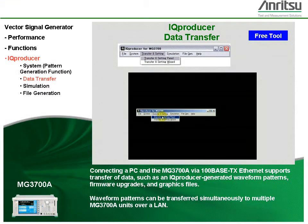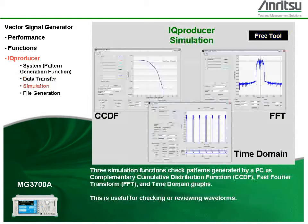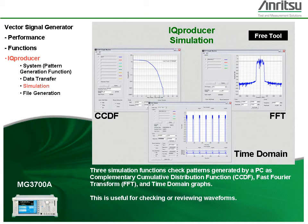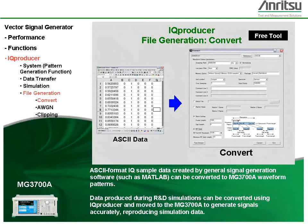Waveform patterns can be transferred simultaneously to multiple MG3700A units over a LAN. Three simulation functions check patterns generated by a PC as complementary cumulative distribution function, fast Fourier transform, and time domain graphs — useful for checking or reviewing waveforms. ASCII format IQ sample data created by general signal generation software such as MATLAB can be converted to MG3700A waveform patterns. Data produced during R&D simulations can be converted using IQ producer and moved to the MG3700A to generate signals accurately, reproducing simulation data.